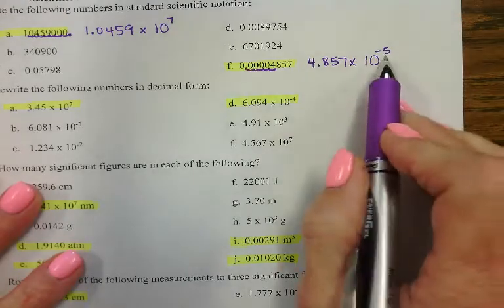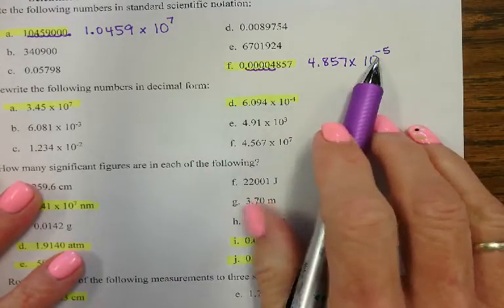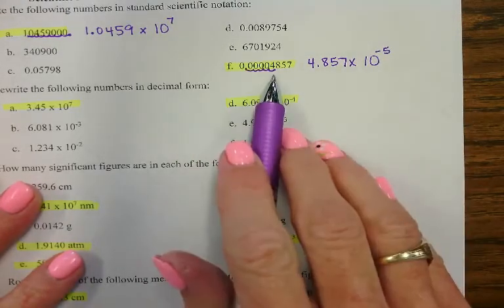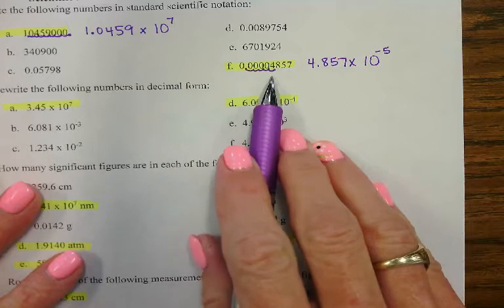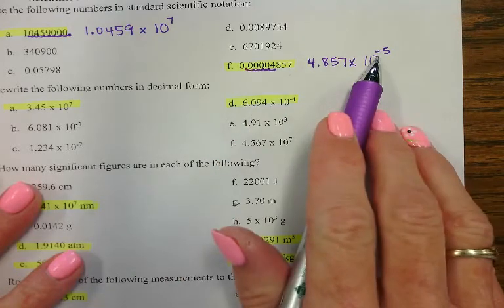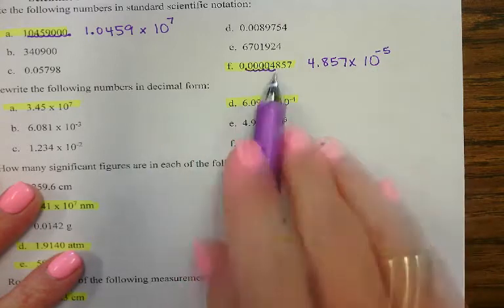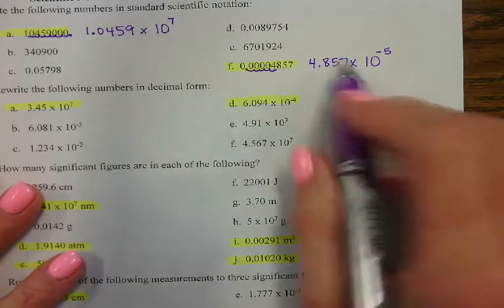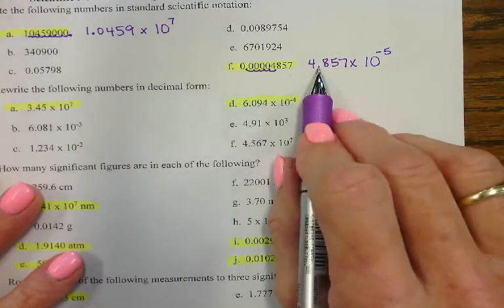Why is it negative 5? It's negative because the number I started with is way less than 1. If the number's less than 1, your exponent's going to be negative. And why is it 5? Because I had to move it five spaces to get to a place where I had a non-zero number in front of it.